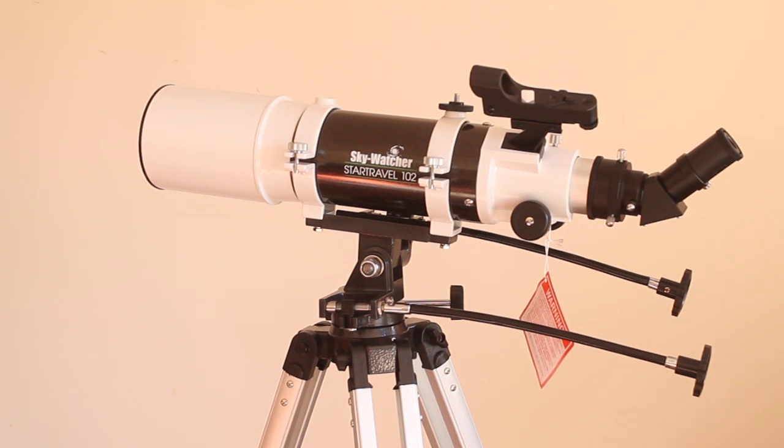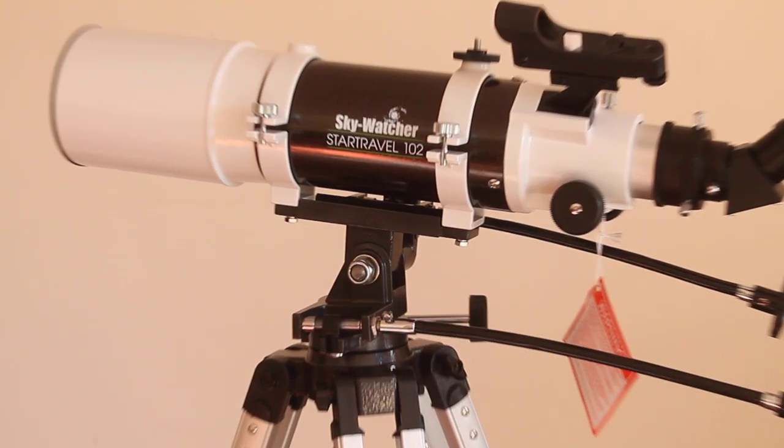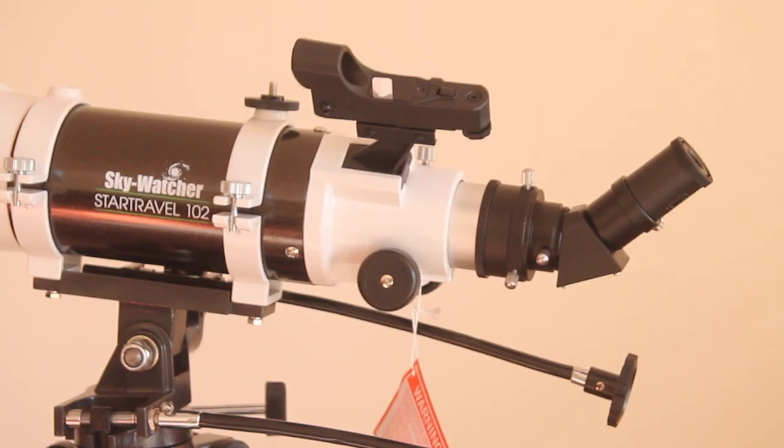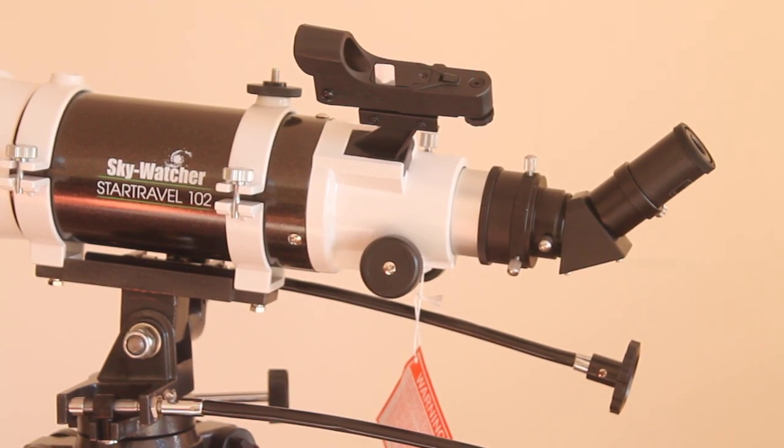Obviously slacking them off too much, you do reduce that stability. As you can see, it has a red dot finder as standard, but you can put a visual one in if you like, such as the Sky Watcher six times 30 or the nine times 50.